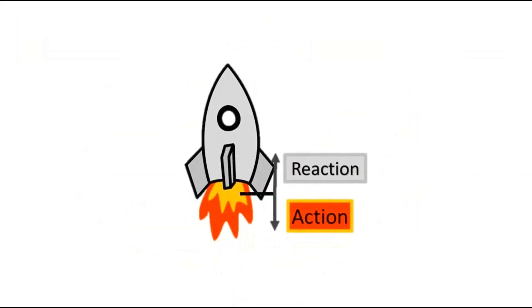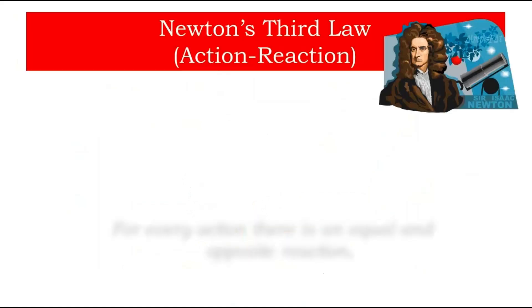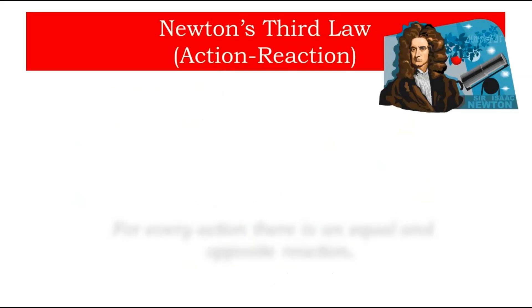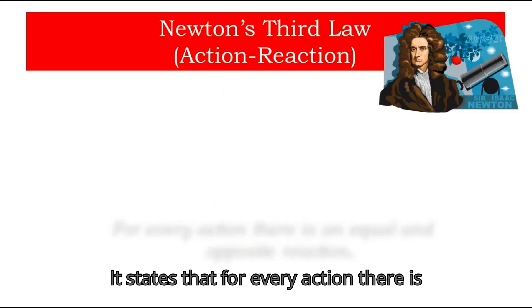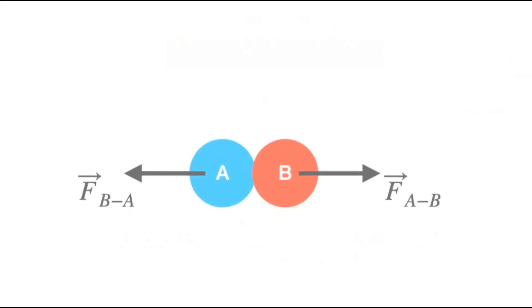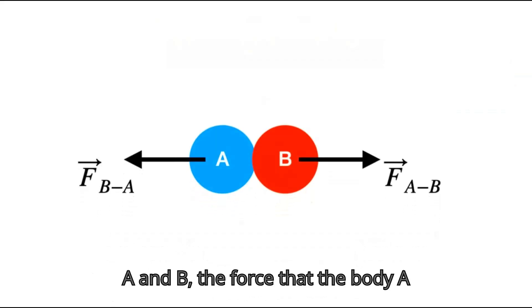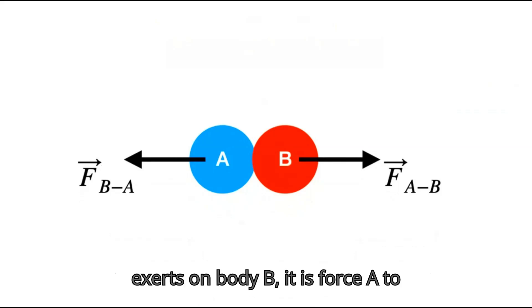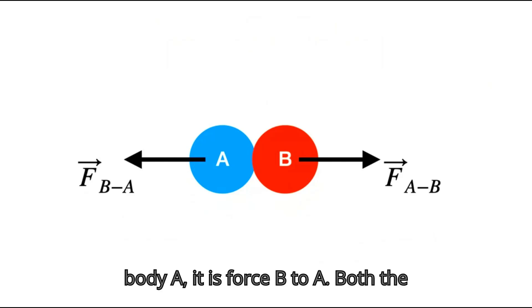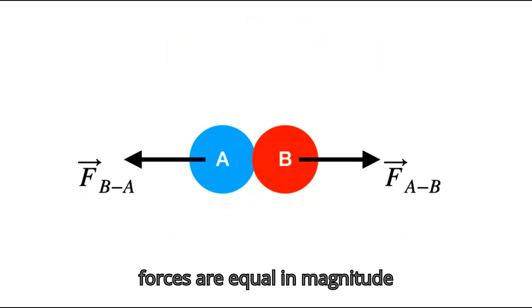Now let's discuss the third law of motion, which explains how rockets move. Newton's third law, also known as the action-reaction law, states that for every action there is always an equal but opposite reaction. If there are two bodies A and B, the force that A exerts on B is equal in magnitude but opposite in direction to the force that B exerts on A.